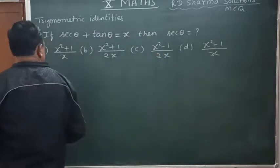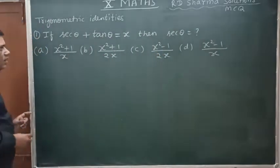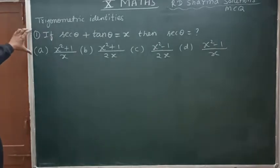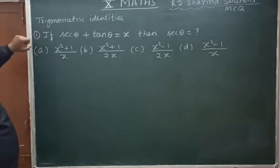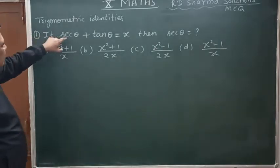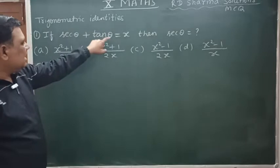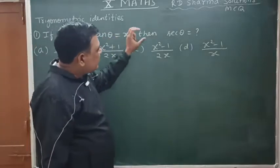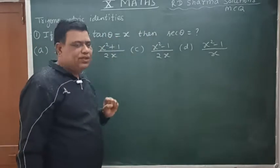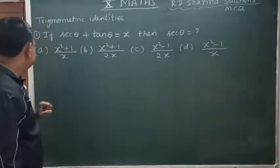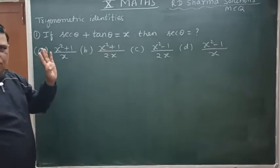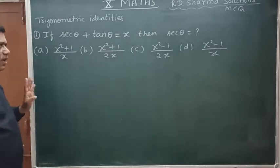In R.D. Sharma books, we leave our question in this one — the MCQ is there again. So first MCQ: if sec θ plus tan θ equals x, then the value of sec θ we can find. We have four options A, B, C, or D in the MCQ.